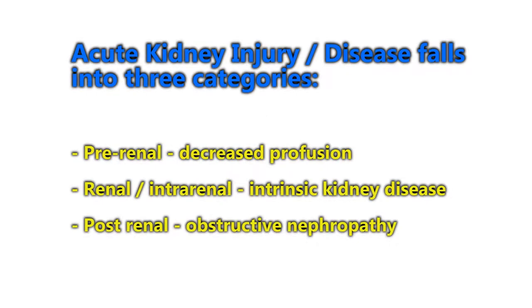Acute kidney injury falls into three categories: pre-renal, or before the kidney, which is related to decreased perfusion; renal, also known as intrarenal or intrinsic kidney disease; and post-renal, or after the kidney, as an obstructive nephropathy.